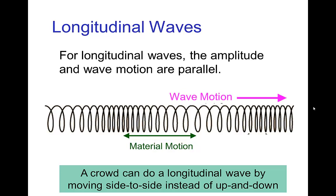Now there's a second category of waves called longitudinal waves. With longitudinal waves, the wave motion and the material motion are actually parallel. A crowd could do this type of wave if instead of standing up and sitting down, they would swing from side to side while sitting in their seats.